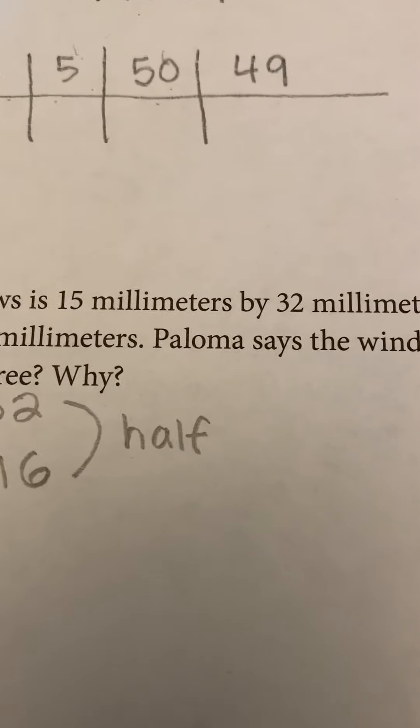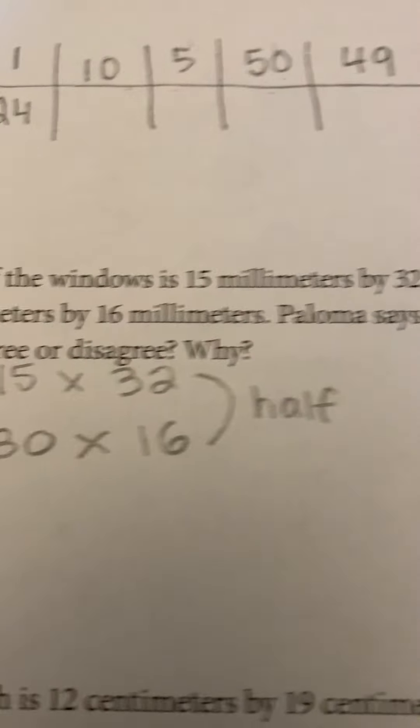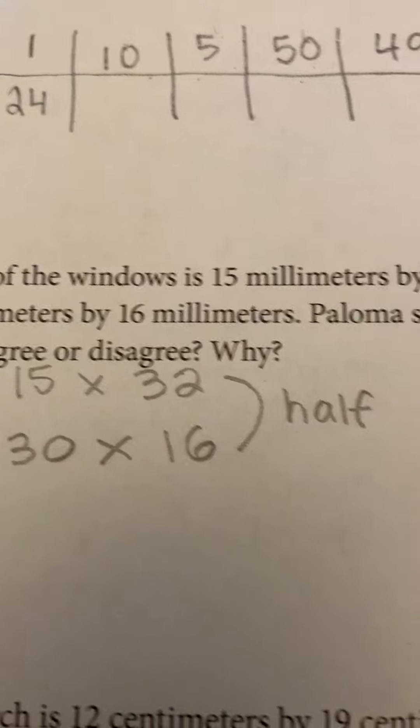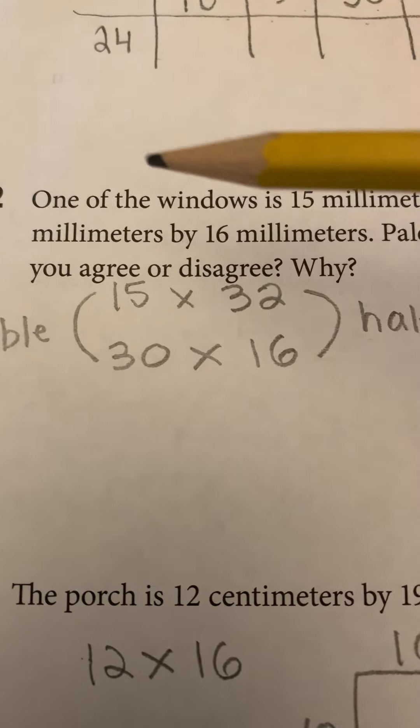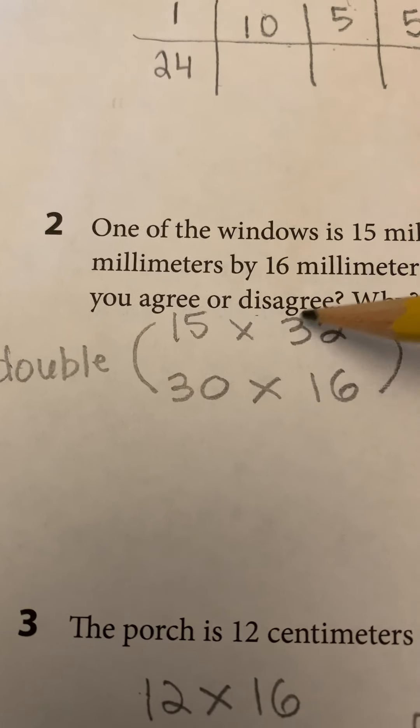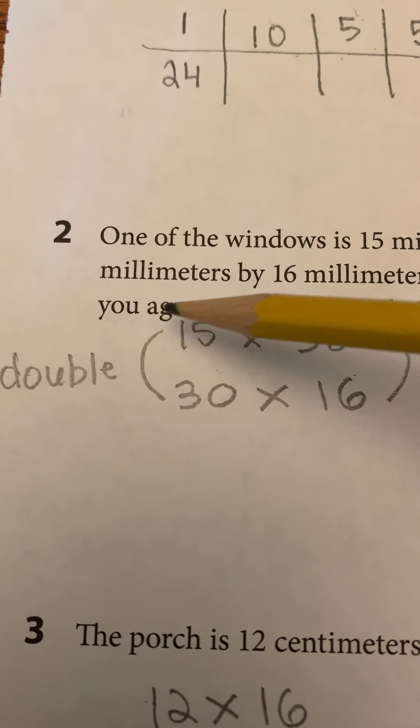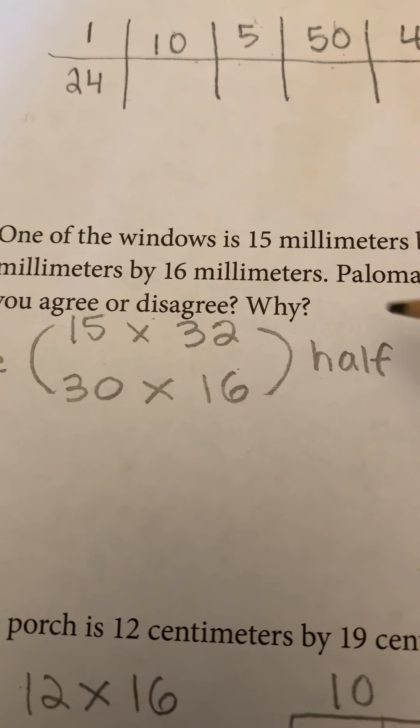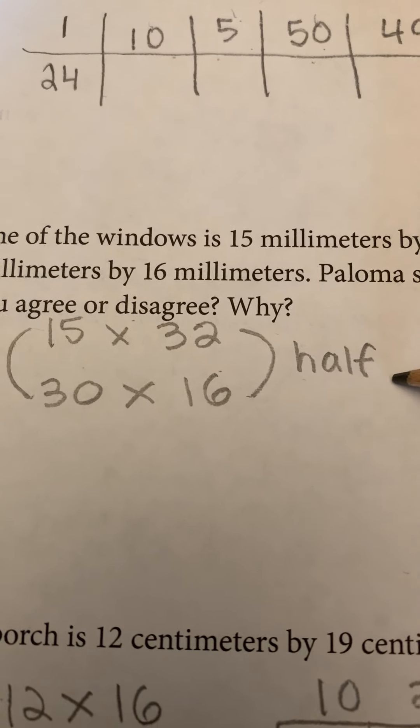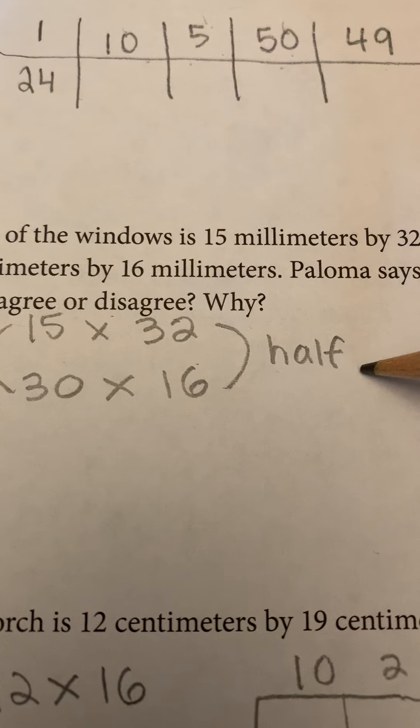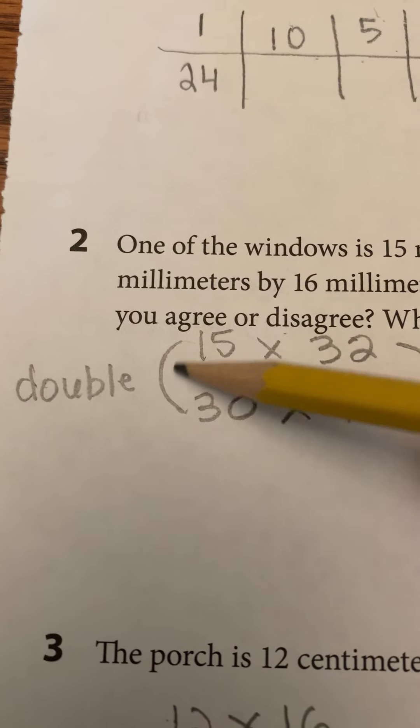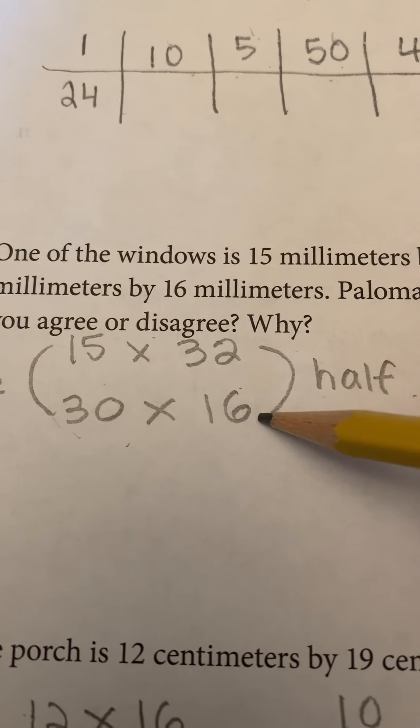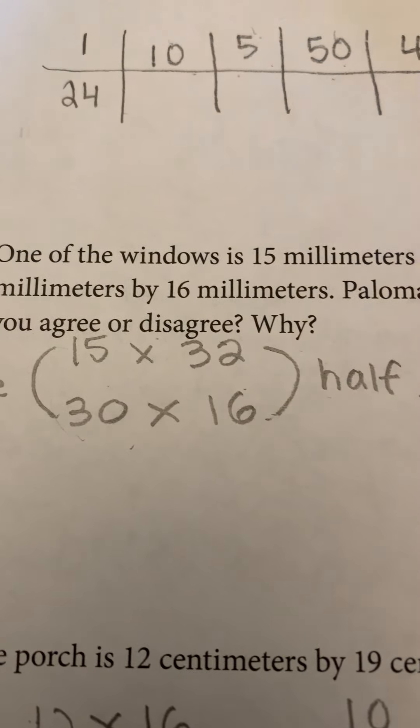One of the windows is 15 millimeters by 32 millimeters. Another window is 30 millimeters by 16 millimeters. Are they the same size? Well, I think if you just look at this, you don't even need to solve. 15 times 32 and then 30 times 16. If I double one and I half the other, what's the rule? I think they equal the same amount. So yes, of course they're the same. Because why? I doubled one of the factors, I half the other, and so it's the same answer.